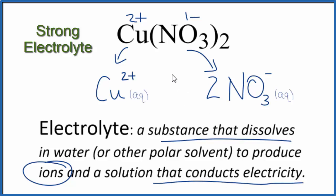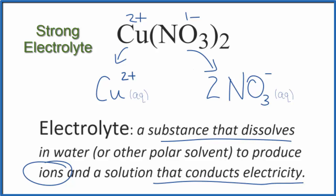This is Dr. B answering the question of whether CuNO₃₂ is an electrolyte or a non-electrolyte. Copper 2 nitrate is a strong electrolyte. Thanks for watching.